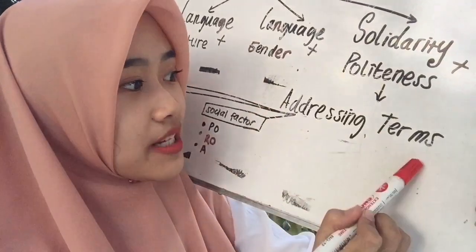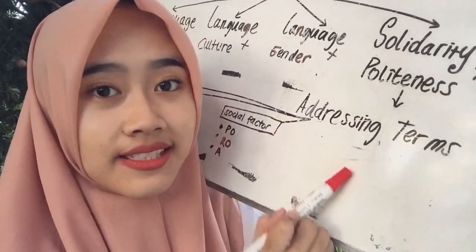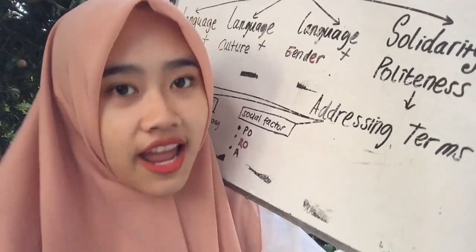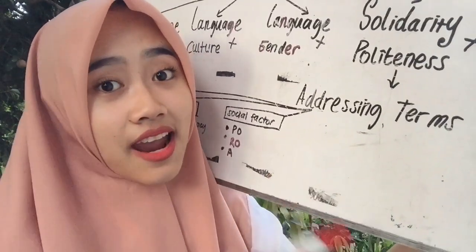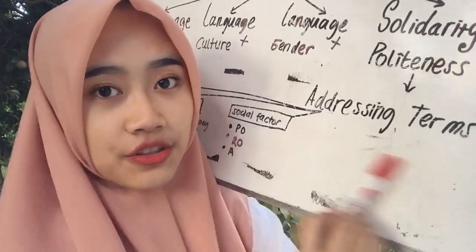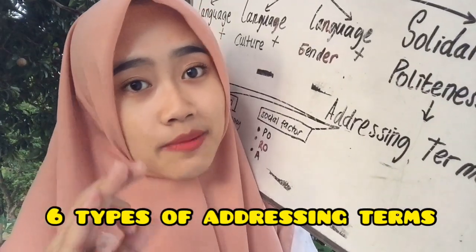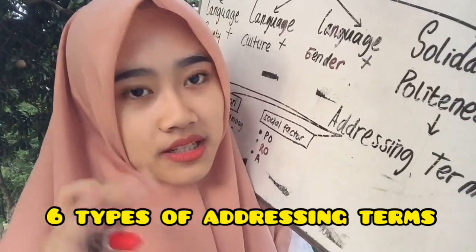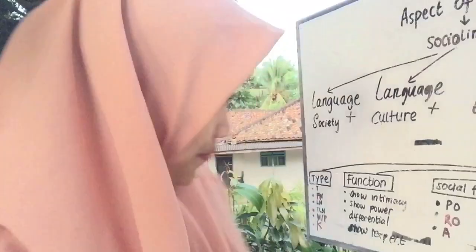Well friends, before we jump into the explanation of addressing terms, we have to know the definition first. According to the expert, addressing terms is a term or process to call somebody in speech or writing. After we know addressing terms, we have to know the types. According to Wardhaugh, he stated that there are six types of addressing terms, including their six symbols — I will show you.